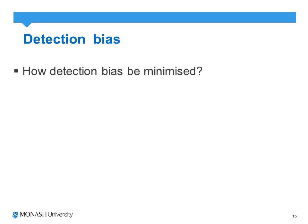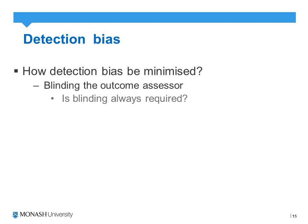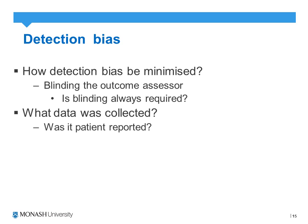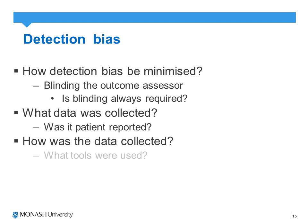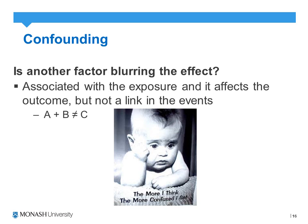Detection bias can be minimized by blinding the outcome assessor, though it's not always required — for outcomes like mortality, there is little need to blind the assessor as the result is difficult to manipulate. We should also identify what data was collected: was it patient-reported, how was it reported, what tools were used, and were those tools validated in terms of psychometric properties, or were they clinically manipulated in any way?